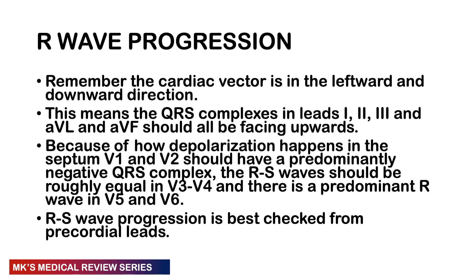Because of the way depolarization happens in the septum — flowing from the left bundle branch towards the right — there is a vector flowing in that direction. This means that V1 and V2 will predominantly have a negative QRS complex. V3 and V4 should have roughly equal R wave and S wave sizes. V5 and V6 should have a predominant R wave, so they should be predominantly positive. So the pattern goes: initially predominantly negative, then equal, then predominantly positive.